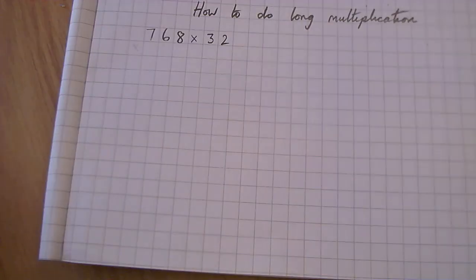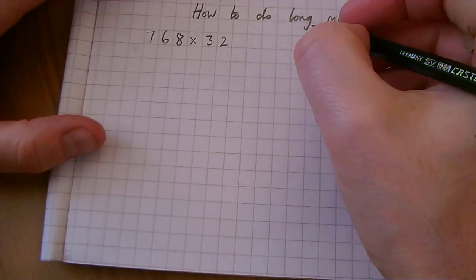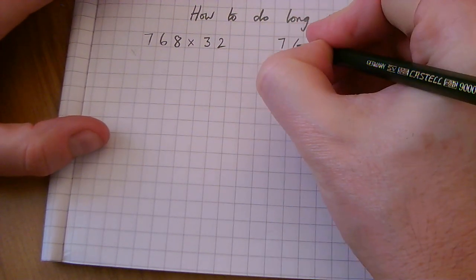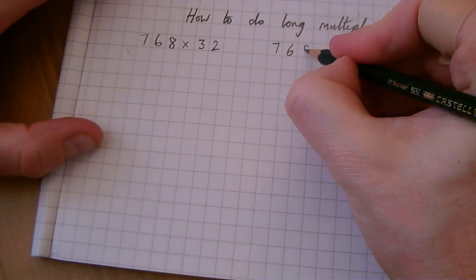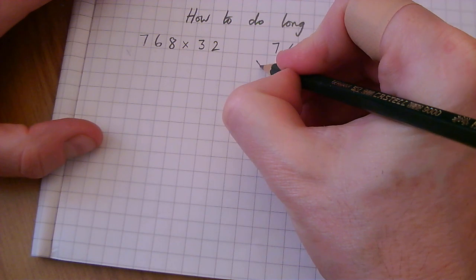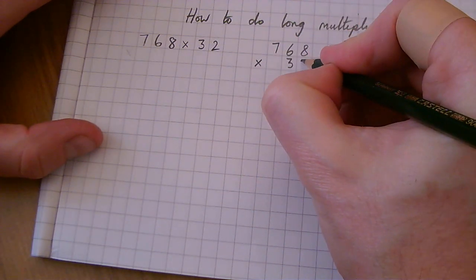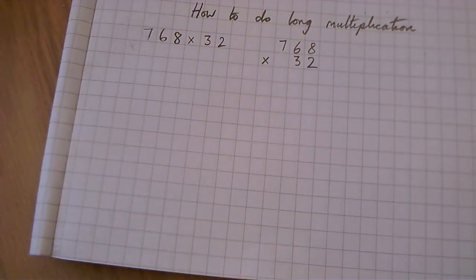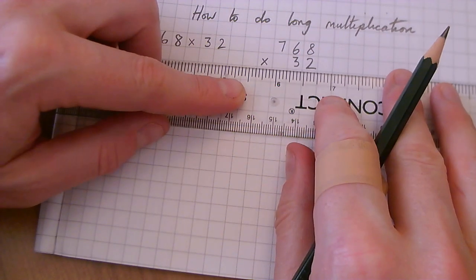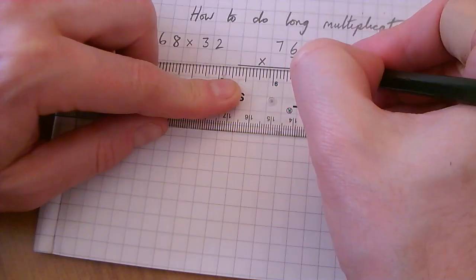Long multiplication is going to be the best method for doing this question. We're going to set it out like this: 768 times 32. We've lined up the ones and the tens, and we're going to draw a line there.